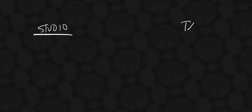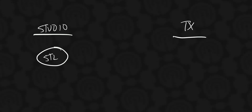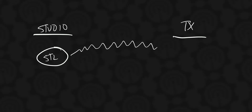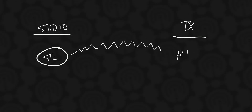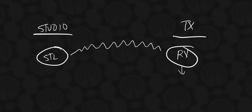Let's make ourselves a little diagram here. You've got our studio over here and we've got our transmitter site over here. The way we've traditionally been doing this is you've got your studio-side STL transmitter, and then that would be sent over a 950 megahertz microwave link to the receiver at the transmitter site. And that'll spit out the audio to the transmitter.